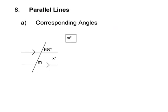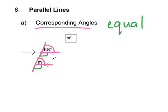Corresponding angles form an F pattern. Looking at the two angles that correspond — they're in the same relative position. Corresponding angles are equal. So if the pink angle is 68 degrees, angle M is also 68 degrees.